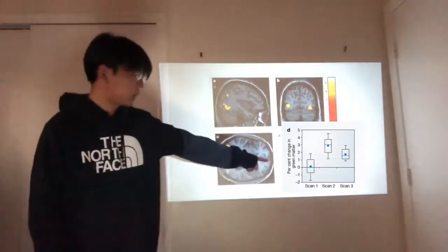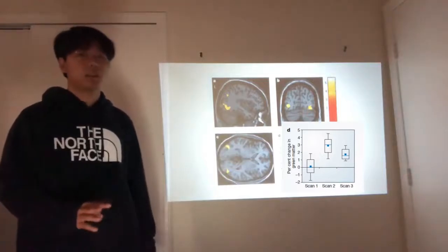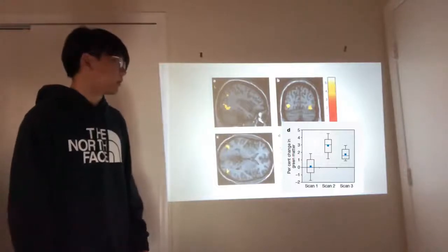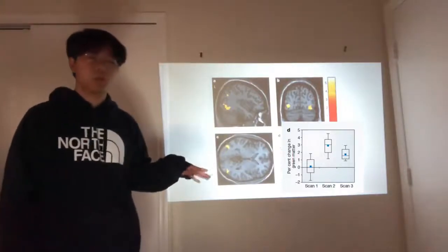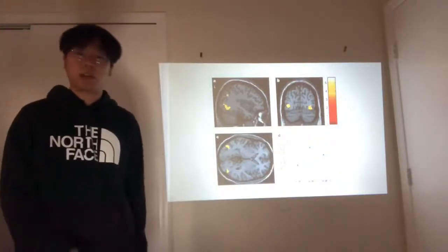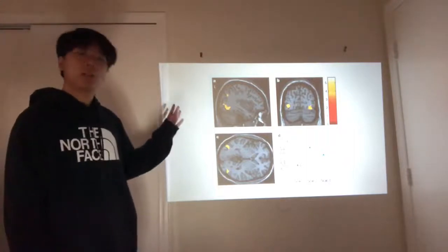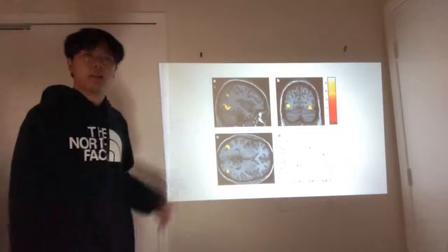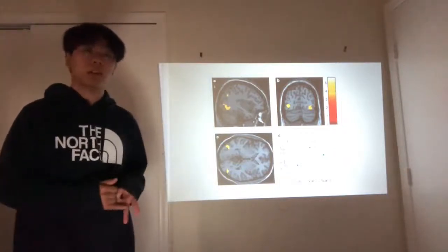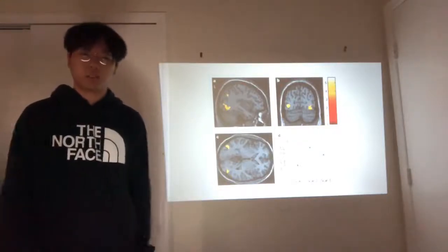After scan 3, which is after he was required not to learn for the next three months, the percent change in gray matter dropped from 3.5% to 2.5% — about a 1% decrease. This shows how a behavior like learning can actually physically change the brain and affect a biological factor of the body. Be it a lack of learning or a surplus of learning, it could affect how our biology is displayed.